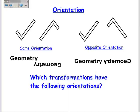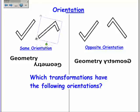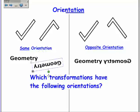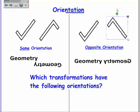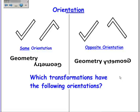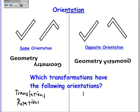Finally, about orientations. Two images have the same orientation if you can translate or rotate one so it looks exactly the same as the other. If you rotate it and there's no way to make it look the same — it's backwards — then the orientation is opposite. Translations and rotations preserve the same orientation. Reflections and glide reflections change orientation.